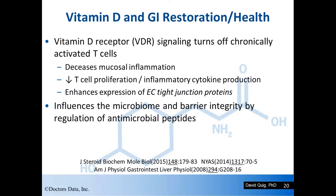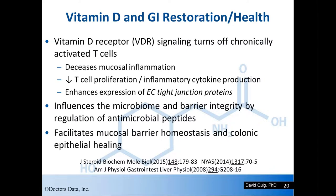I want to talk about the essential role of vitamin D in gastrointestinal restoration and health. Vitamin D receptor (VDR) signaling turns off chronically active T cells, resulting in decreased mucosal inflammation, decreased T cell proliferation and its inflammatory cytokine production, and enhanced expression of endothelial cell tight junction proteins. Vitamin D influences the microbiome and the barrier system integrity by regulation of antimicrobial peptides and facilitates mucosal barrier homeostasis and colonic epithelial healing. Don't forget vitamin D as well as A, but make sure you're not causing an imbalance of D to A.